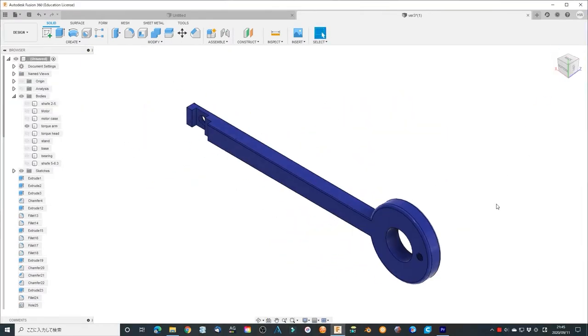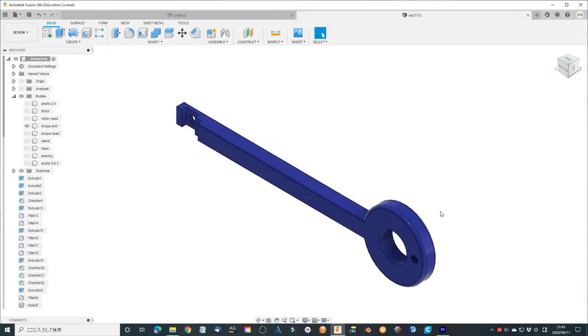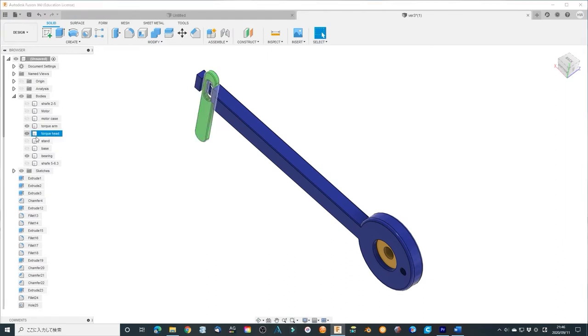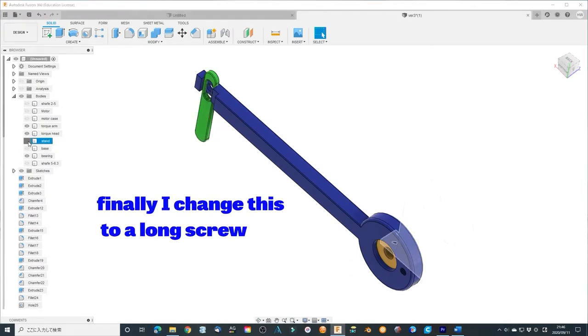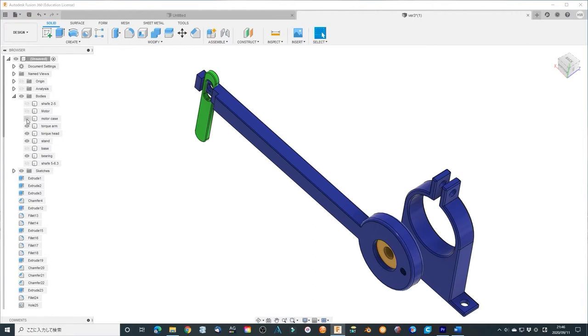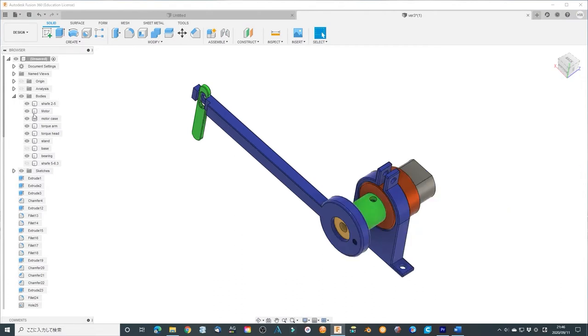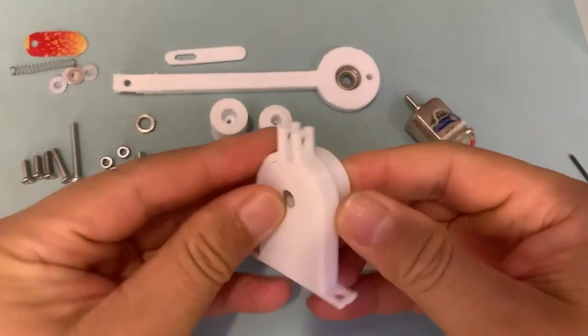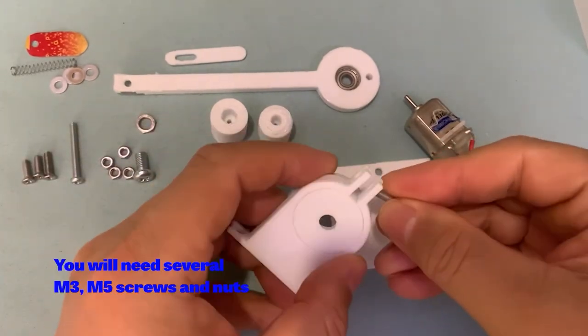Make a torque arm with the length is 10 cm. A ball bearing 695-ZZ is located in the center of the located part. A small torque head is fixed in the head of the torque arm. Make a simple stand which supports the mini-DC motor while the motor is fixed in the motor case. The torque arm is linked by a shaft with the motor. Print them all, construct them. You will need several M3, M5 screws and nuts.